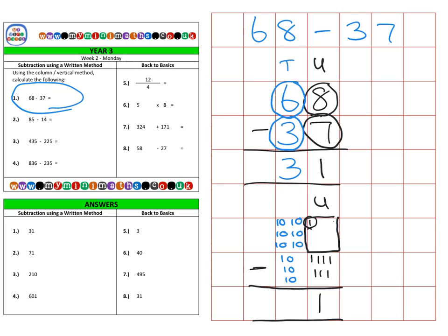Then I'm going to take my six tens and take away three of them — counting one, two, three — and that leaves us with the three tens, for the same answer of 31.